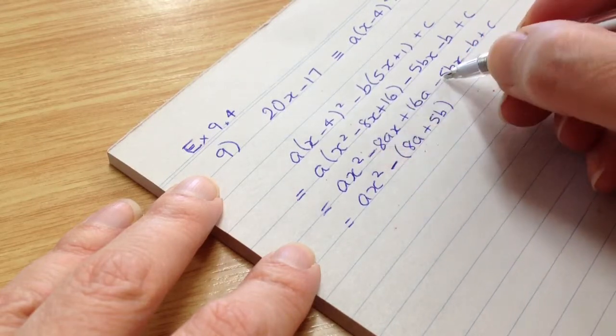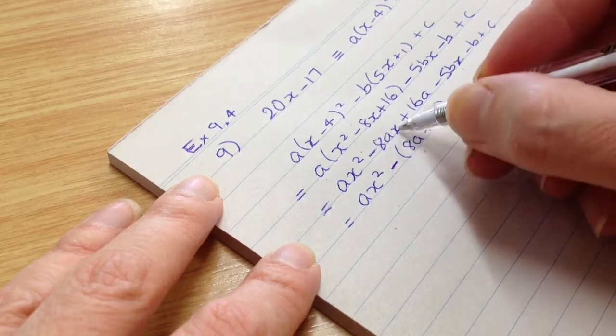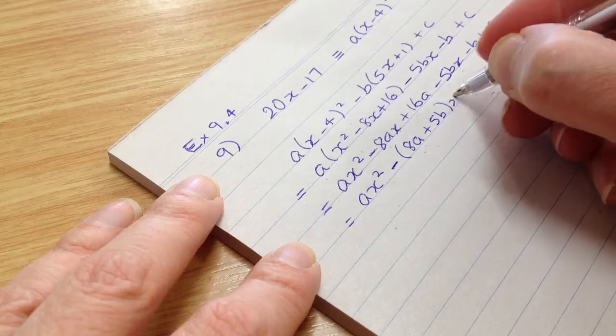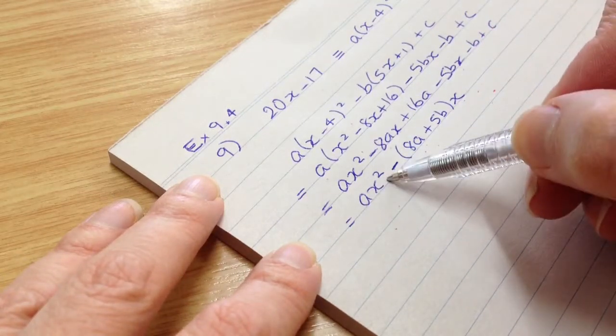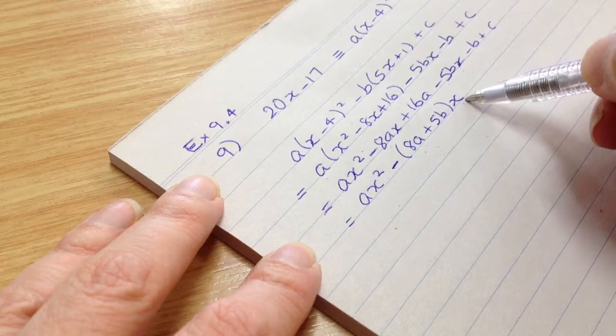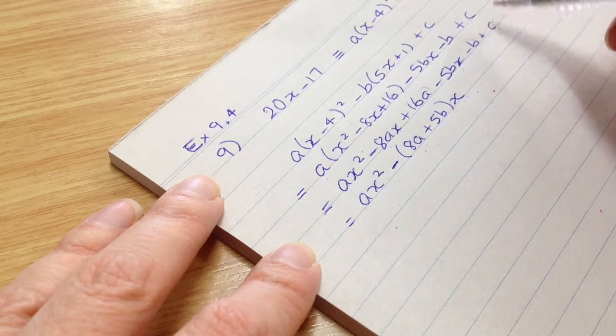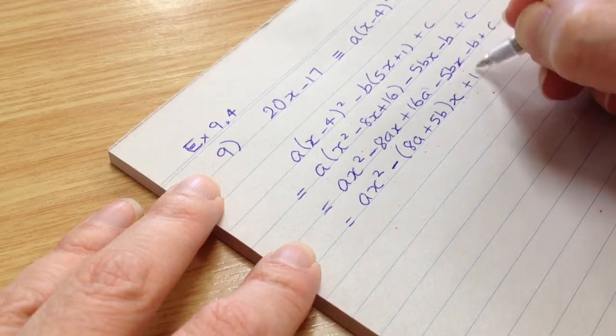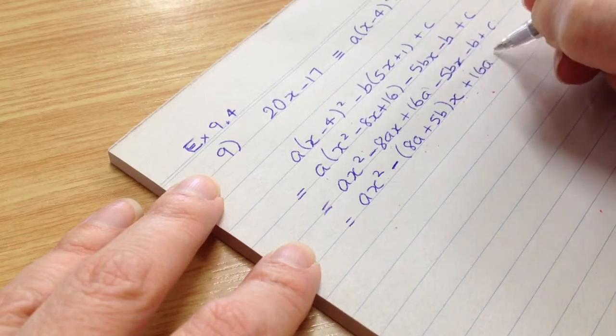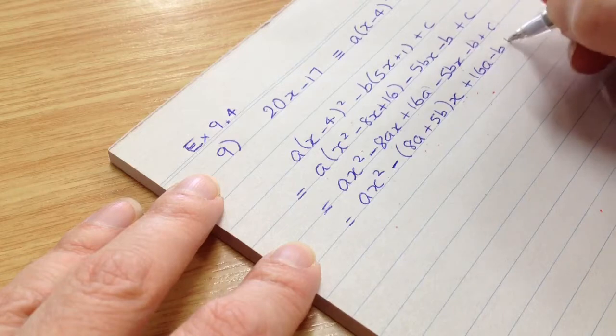All right, we took a common factor, the minus, out in front. And the other common factor was x, so that goes after the brackets. All right, so you've got ax squared minus the x term and then the remaining terms are your constants. So we're just going to put them together. 16a minus b plus c.